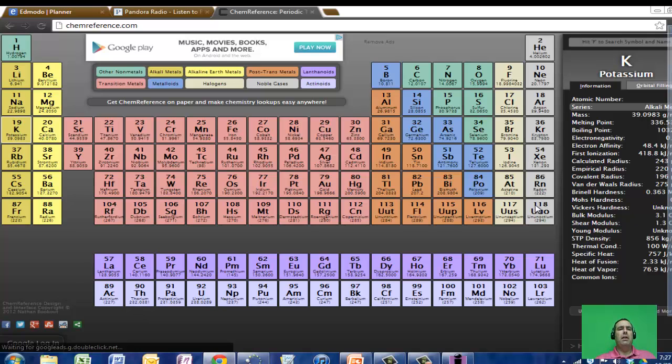The periodic table is also organized into groups. We said there are 18 groups. Groups are vertical. So here is group number one, group number two, group number three, four, five, six, seven, eight, nine, ten. And when you get all the way over here, here is group 16, group 17, and group 18.